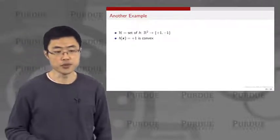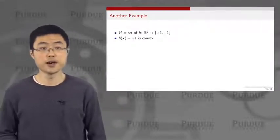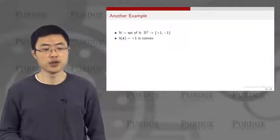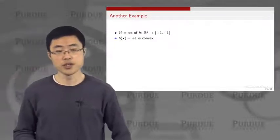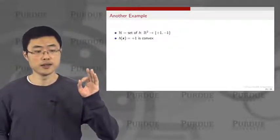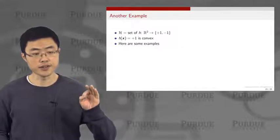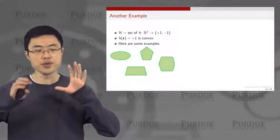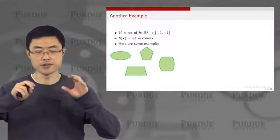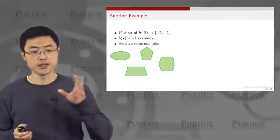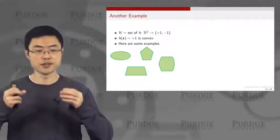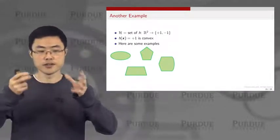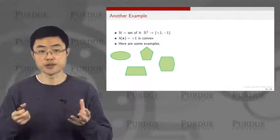Let's look at more examples. Suppose your hypothesis set H is a mapping to plus one and minus one, where h gives you plus one when the input is inside a convex set. Here are some examples — you are only considering convex sets as your hypothesis h. These include an ellipse, a pentagon, and different shapes. As long as the set is convex, you give a plus one; otherwise minus one.